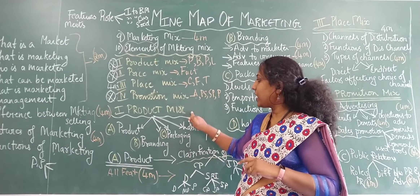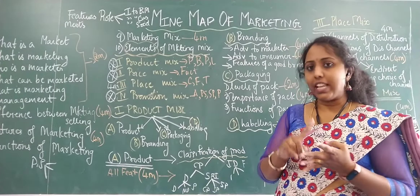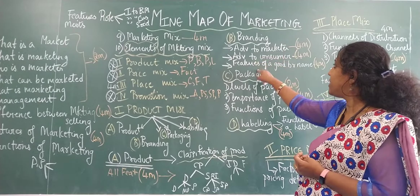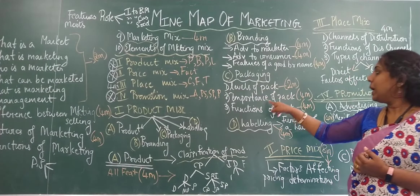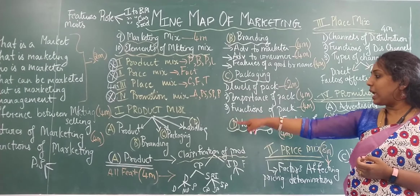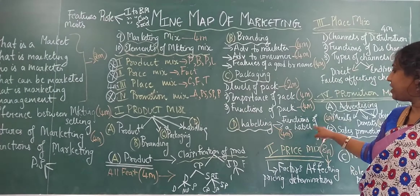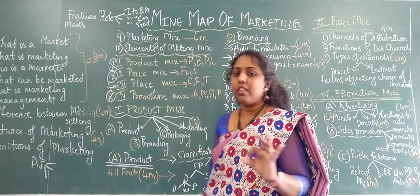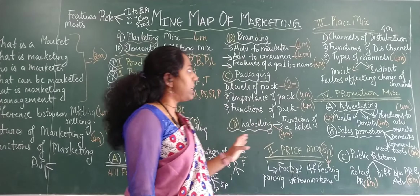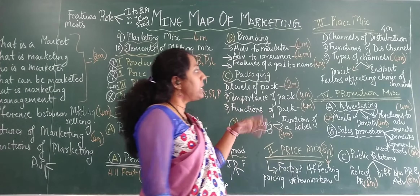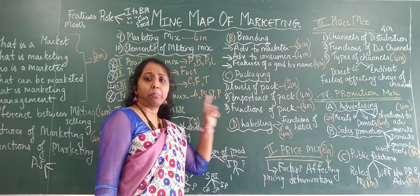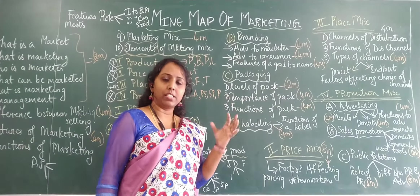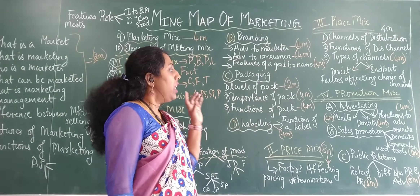The subdivisions start from here: product mix is divided into product, branding, packaging, and labeling. Product is divided into classification; branding into advantages to marketer, advantages to consumer, and features of a good brand; packaging into levels, importance, and functions; and labeling into functions of a label for a four marker. Price mix has one solid topic — factors determining or affecting the price. Under place mix, last year there was a question on types of channels of distribution — direct and indirect.